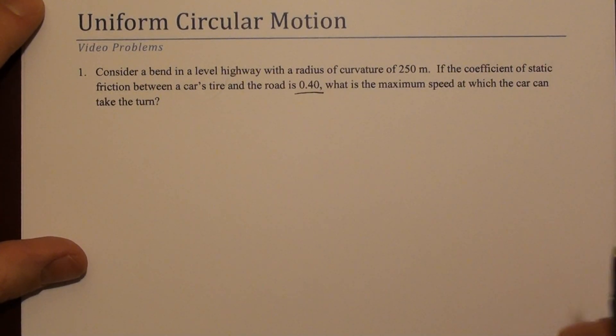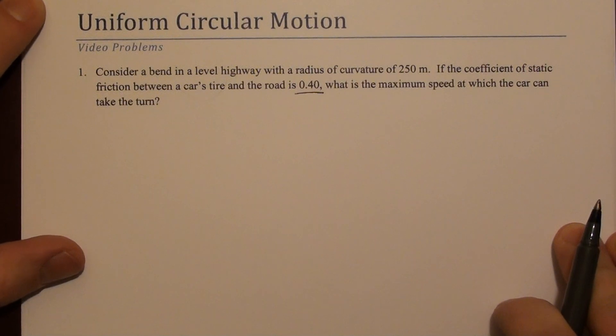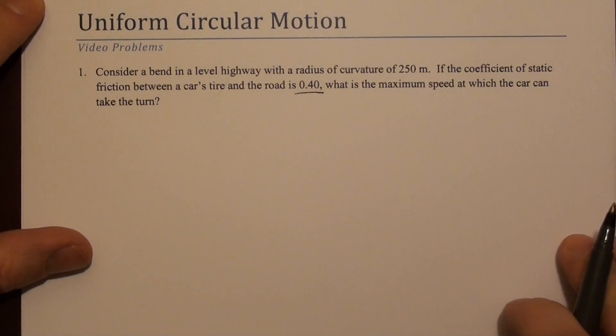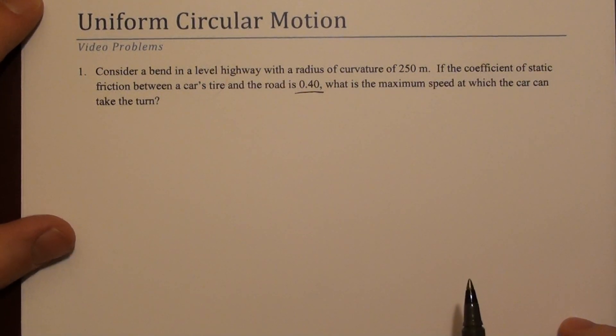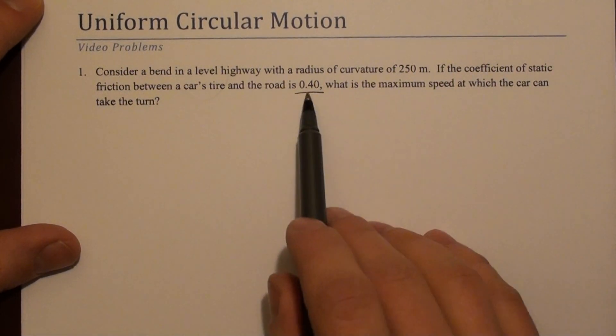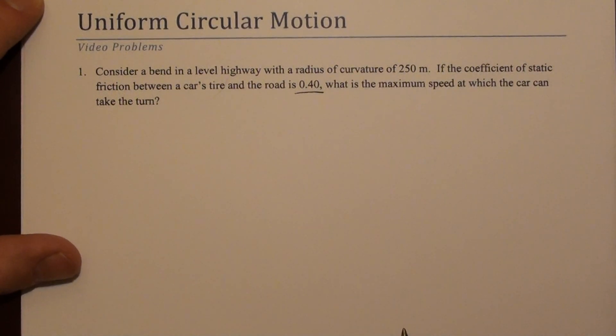This video covers problems involving uniform circular motion, which is motion of a body in a circular path with constant speed. The first problem asks: consider a level highway with a radius of curvature of 250 meters. The coefficient of static friction between the car's tires and the road is 0.4. What is the maximum speed at which the car can take this turn?